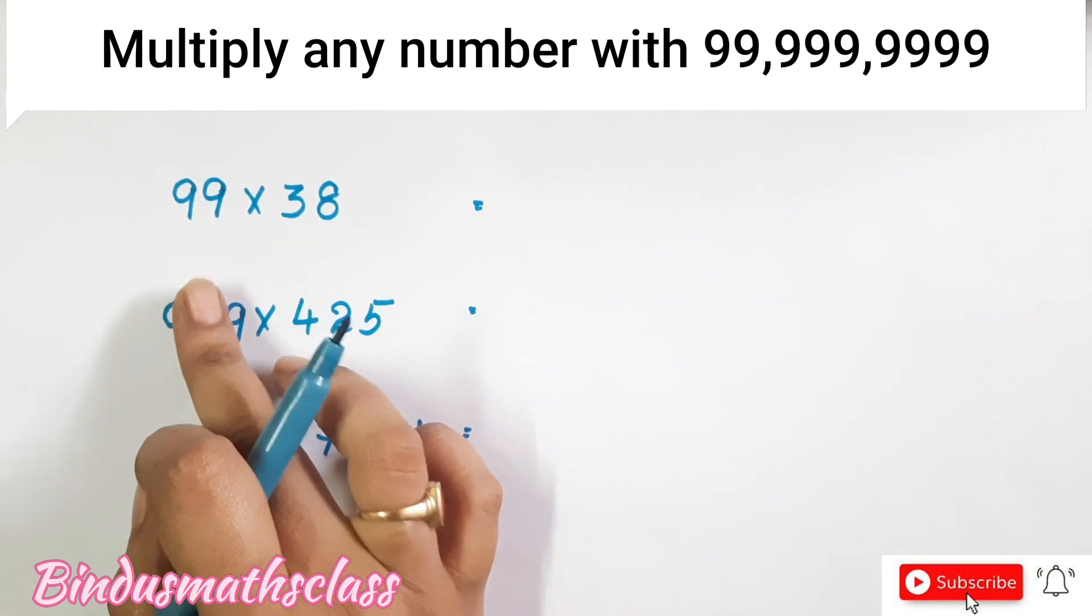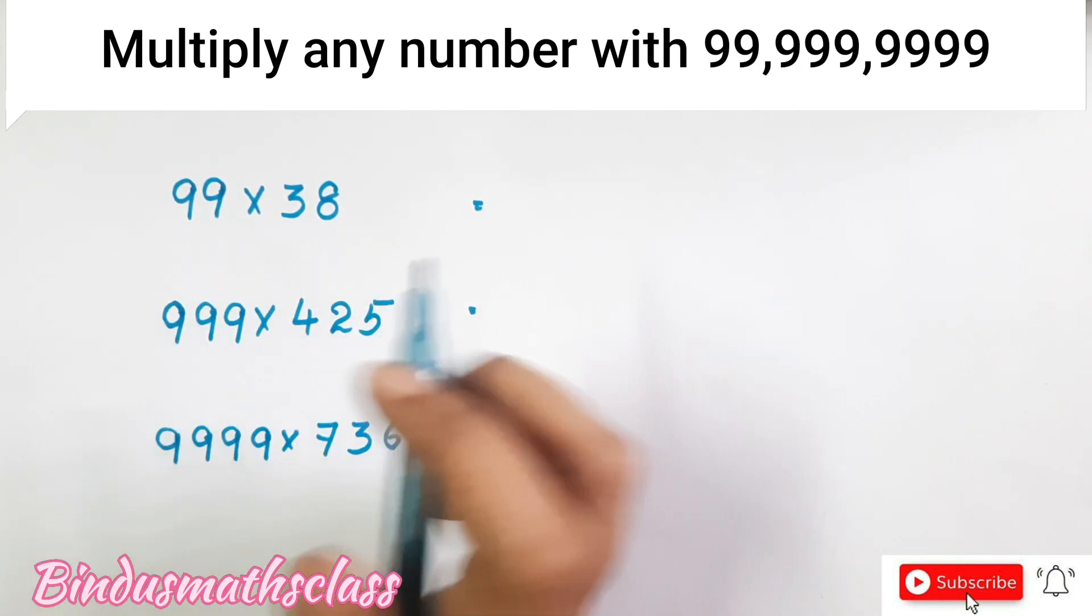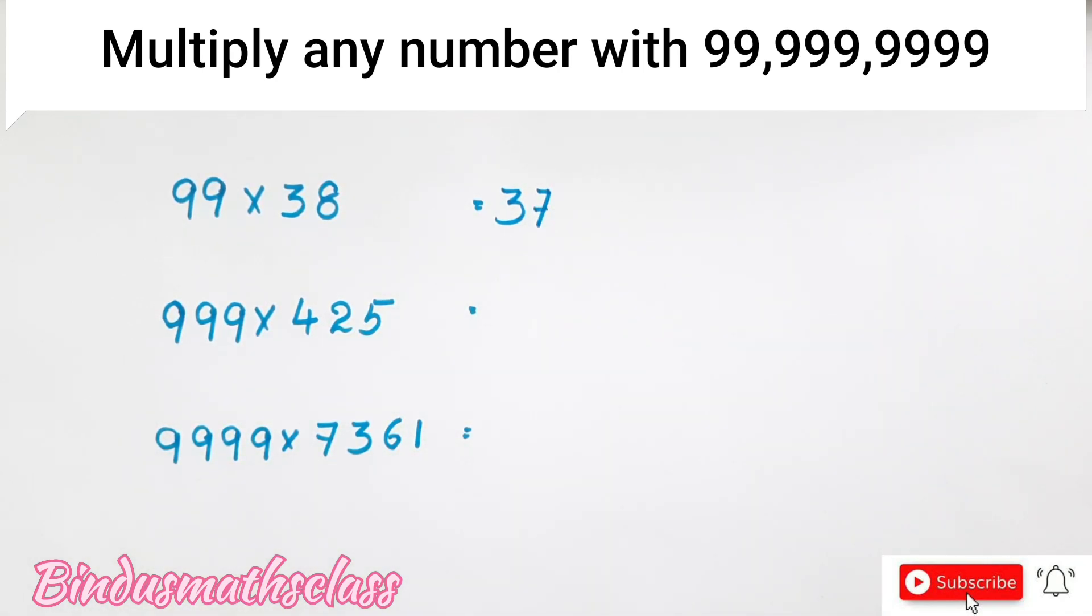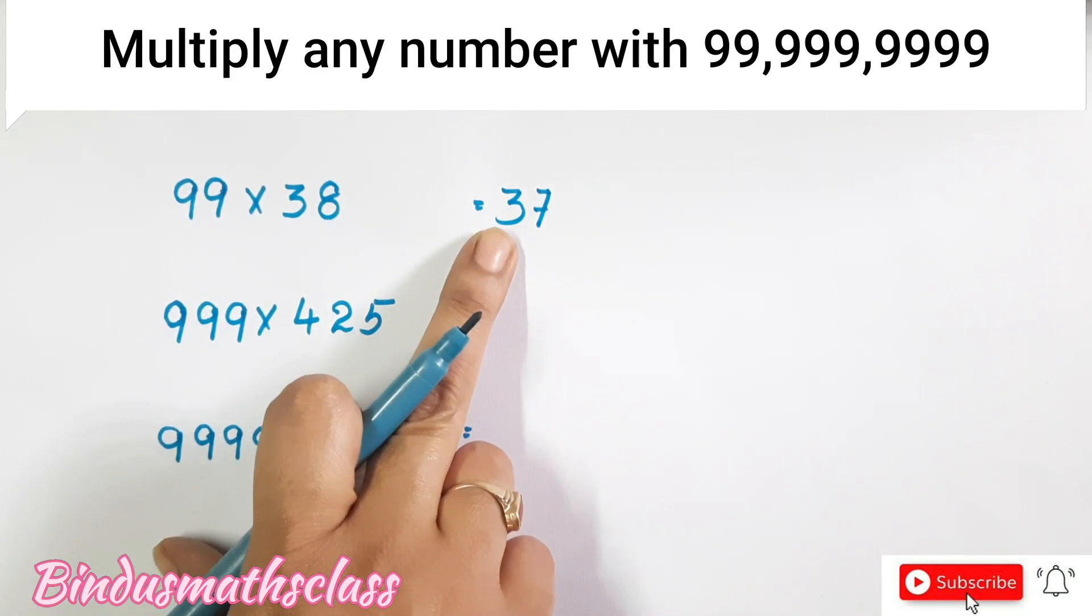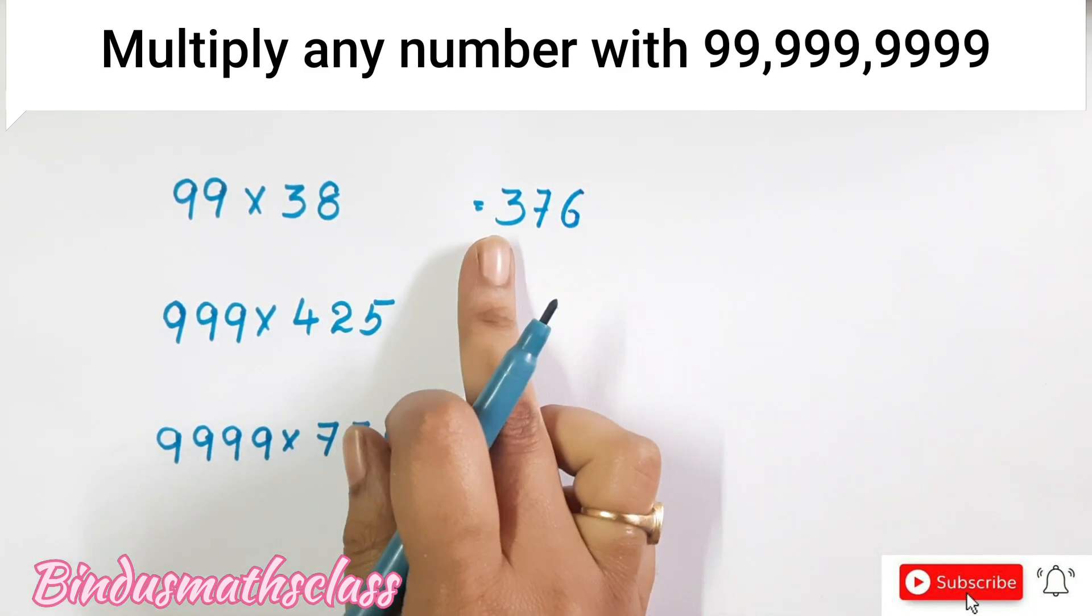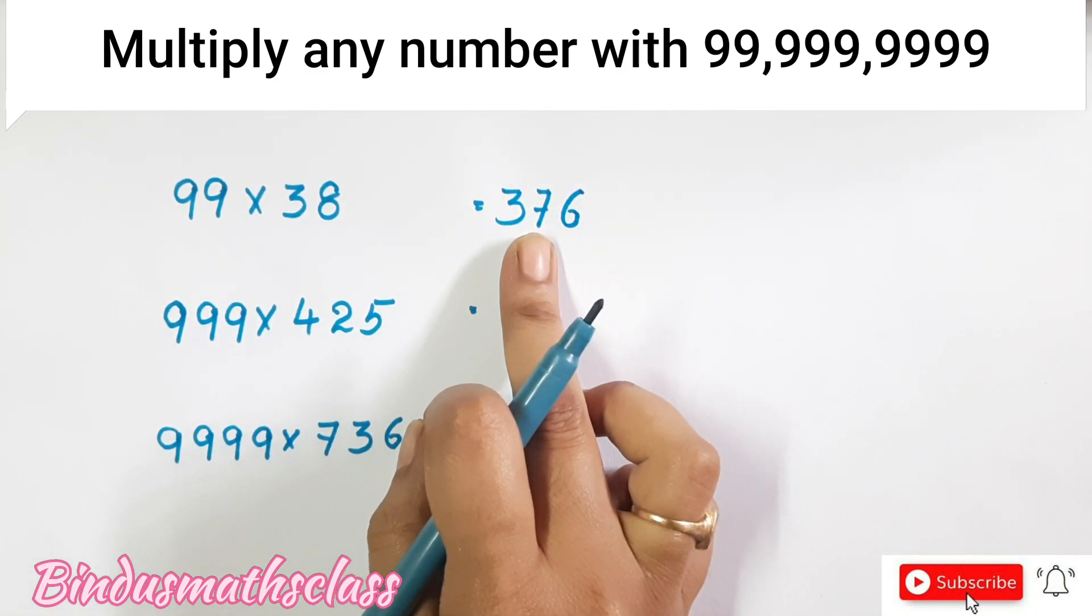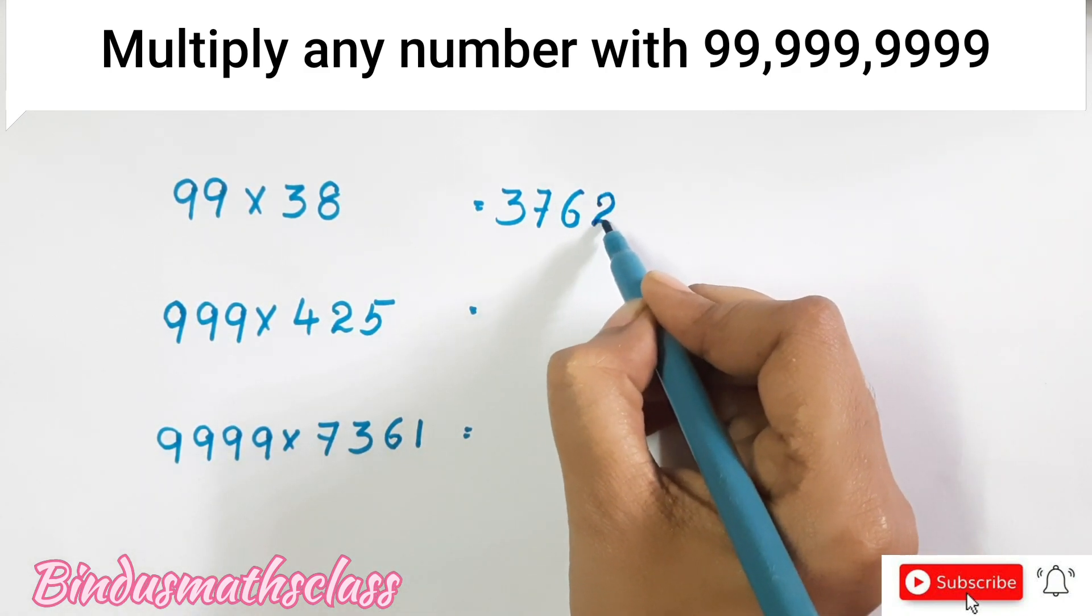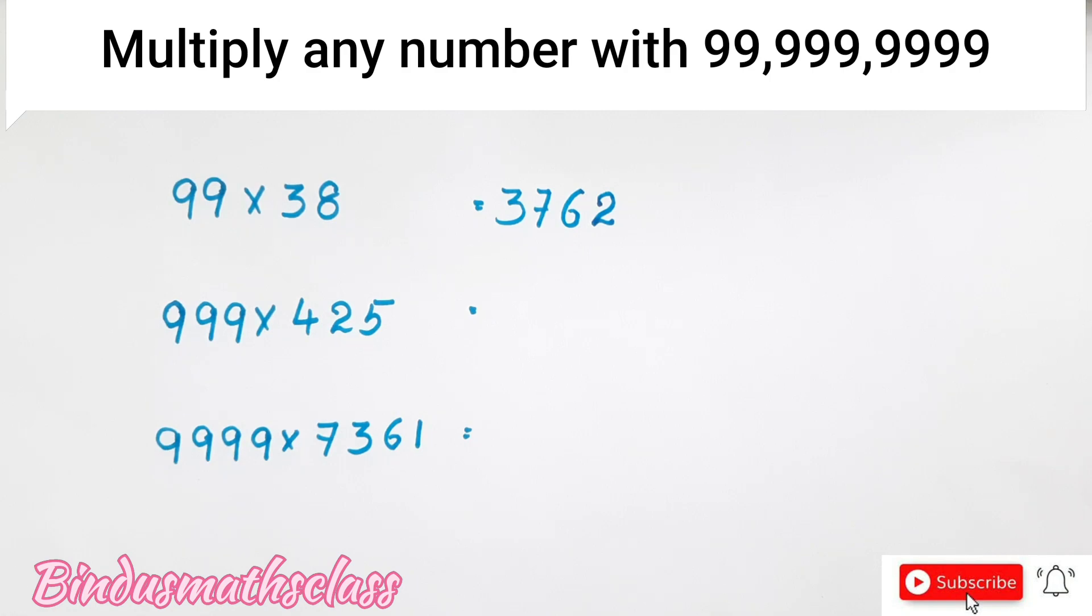write the number just before it. So here, 38 before number is 37. After that, you have to write the number that is added up to 9's. So here, if we write 6, it will be added to 9. Now here, 2 is added to get 9. Then you write here 2. And your answer is 3762.